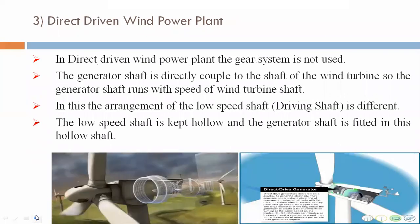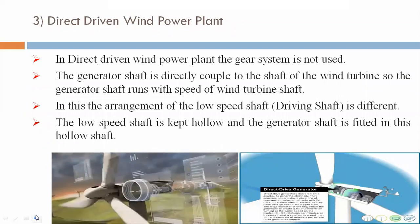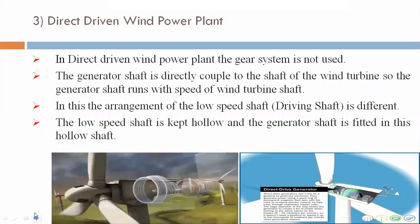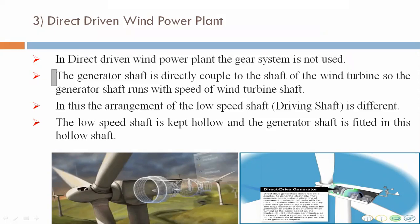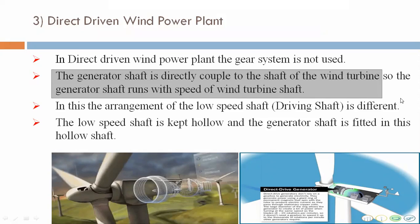The third type is the direct driven wind power plant. In this configuration, the gear system is not used. The generator shaft is directly coupled to the shaft of the wind turbine, so the generator shaft runs at the same speed as the wind turbine shaft.